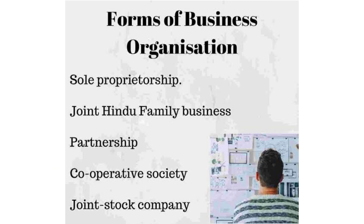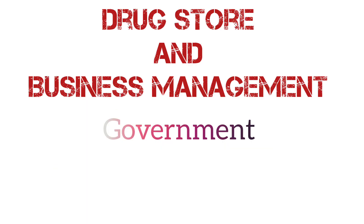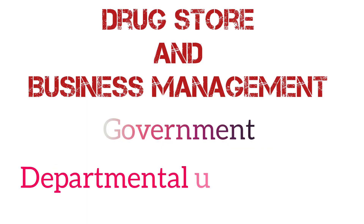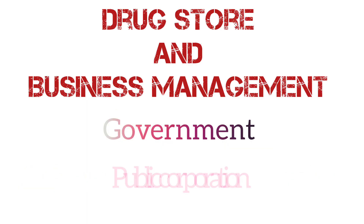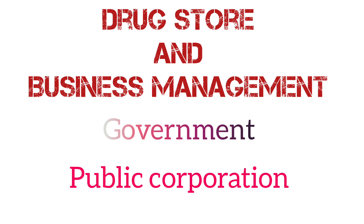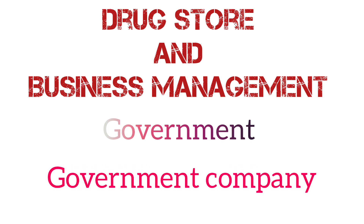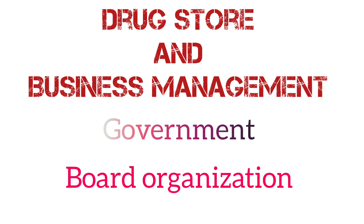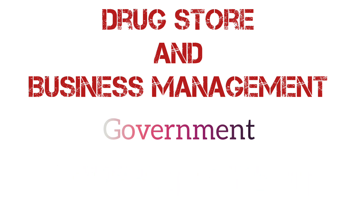For government forms, there are four types: departmental undertaking, public corporation, government company, and board organization. I will cover each of these.